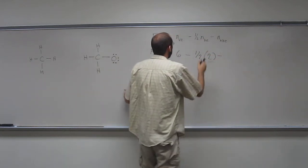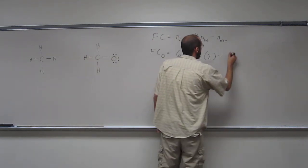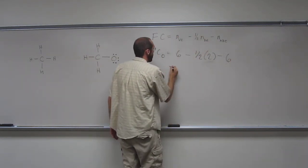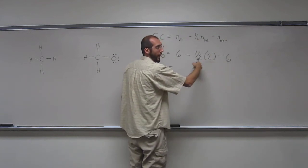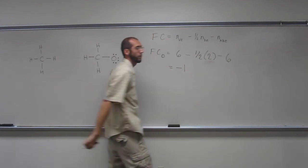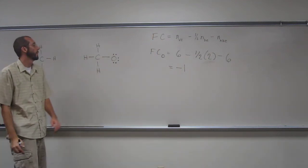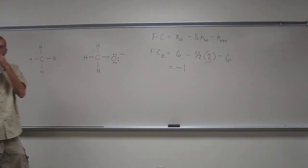And minus the number of non-bonding electrons, so 2, 4, 6. So, 6 minus 6 is 0. One-half times 2, or negative one-half times 2 is negative 1. So the formal charge on that oxygen is negative 1.